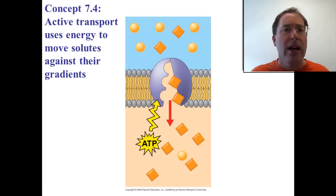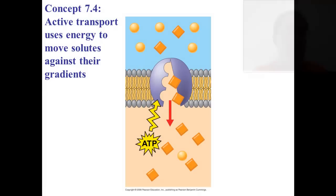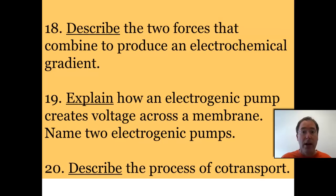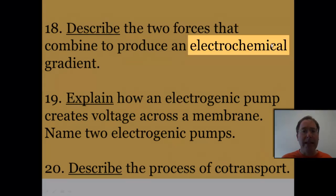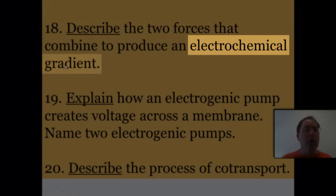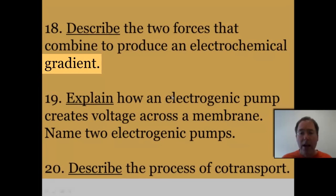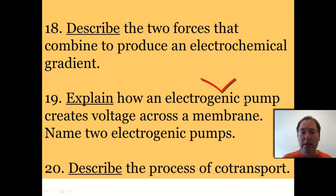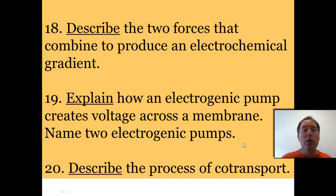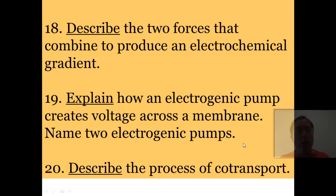It's a big process that exists within the bodies of organisms. Make sure you look for the term electrochemical gradient while you're reading, and look for two forces that combine to produce this gradient. You're also going to see electrogenic pumps — two examples of that — and then something called co-transport. This is section 7.4.